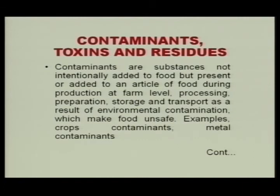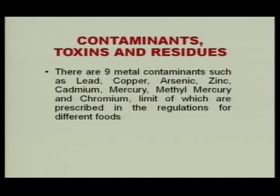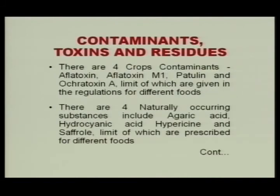Contaminants are substances not intentionally added to food but present as a result of production at farm level, processing, preparation, storage, or transport due to environmental contamination, making food unsafe. Examples include metal contaminants and naturally occurring toxic substances. There are 9 metal contaminants: lead, zinc, copper, arsenic, cadmium, mercury, methyl mercury, and chromium — limits of which are prescribed. There are 4 crop contaminants: aflatoxin, aflatoxin M1, patulin, and ochratoxin — limits prescribed. There are 4 naturally occurring substances: agaric acid, hydrocyanic acid, hypericine acid, and safrole — limits prescribed in the regulations.